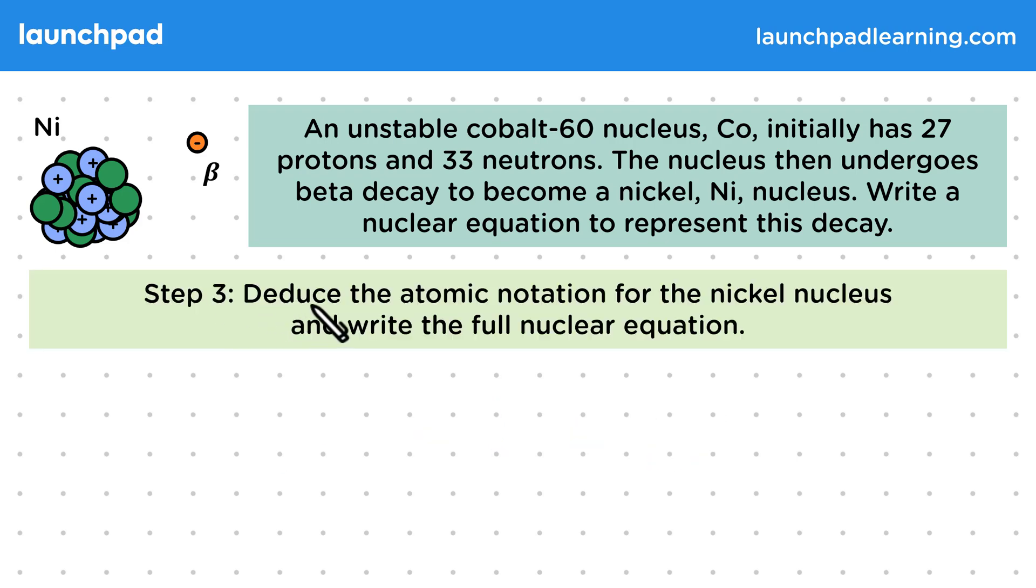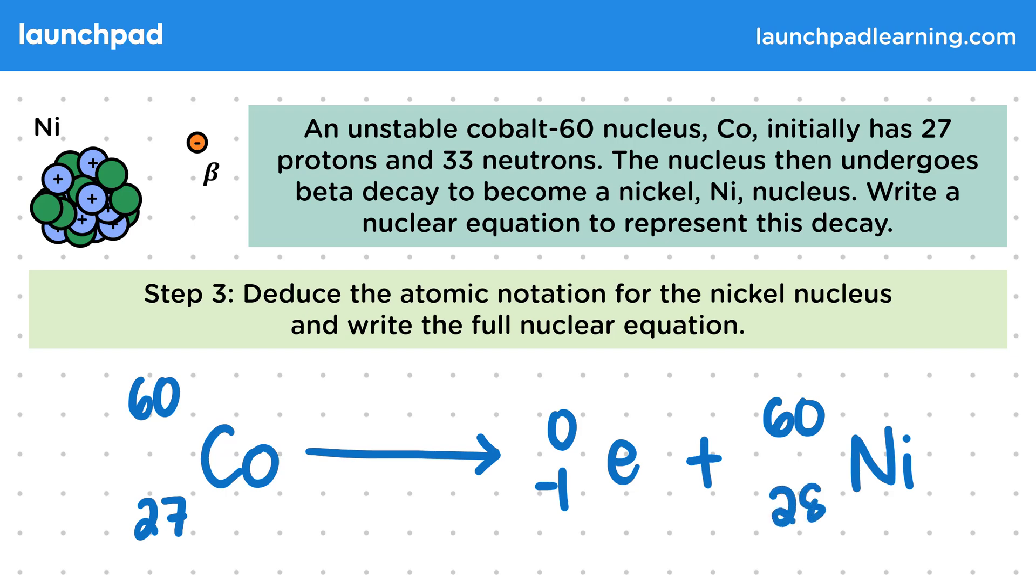For step 3, we want to deduce the atomic notation for the nickel nucleus and write the full nuclear equation. So we start with a cobalt-60 nucleus, which emits a beta particle, represented as an electron with no mass and a charge of minus 1, plus nickel, which has a mass number of 60 and an atomic number of 28.